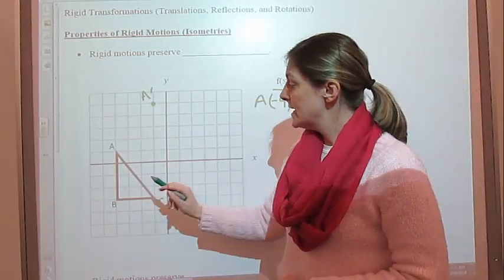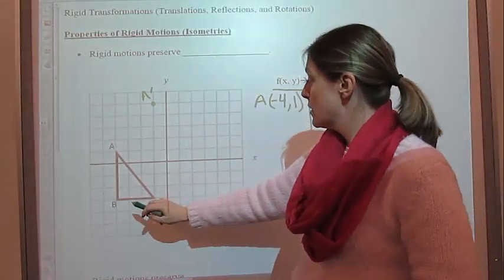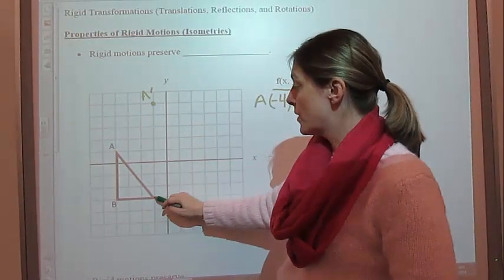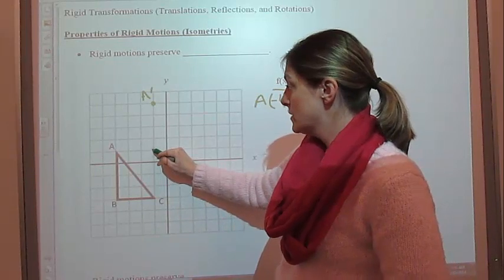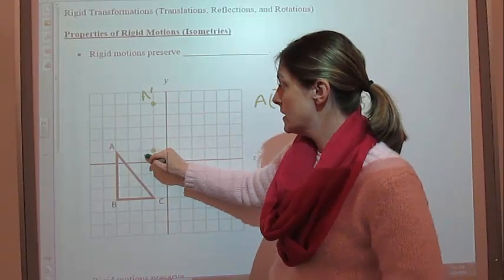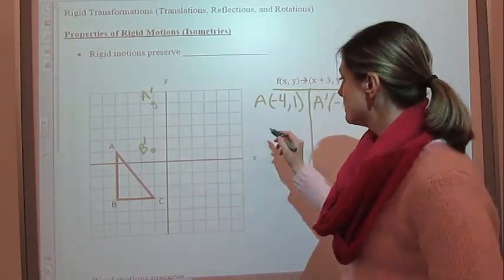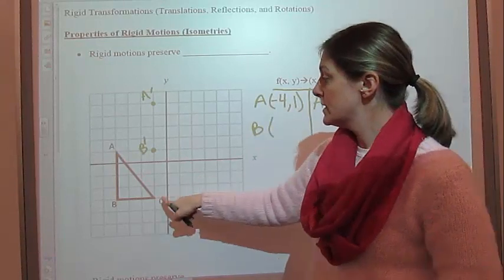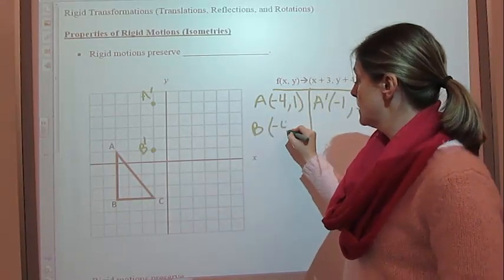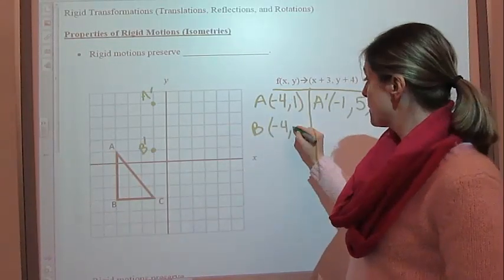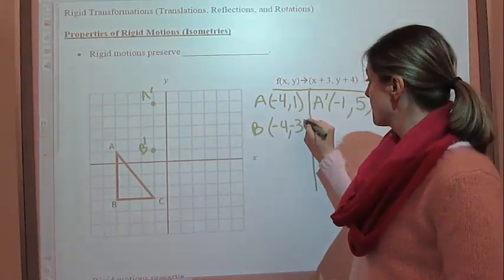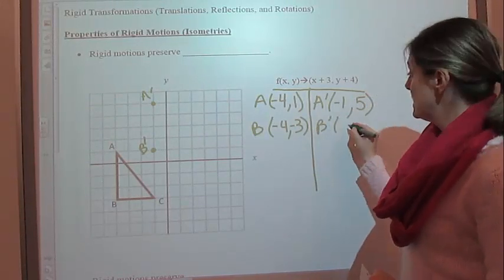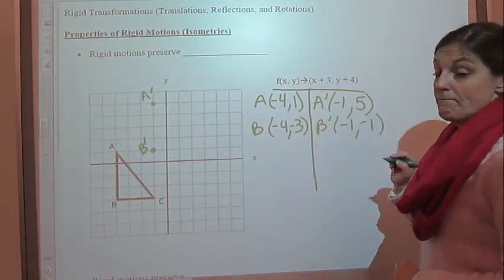Then we're going to take B and move that. So we go over 3 — 1, 2, 3 — and up 4 — 1, 2, 3, 4. So there is B prime. B was negative 4, negative 3, and now B prime is negative 1, negative 1.